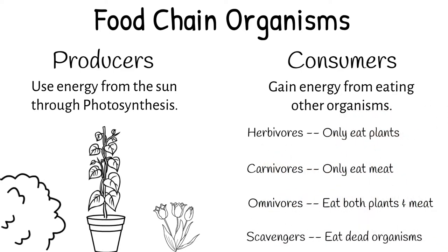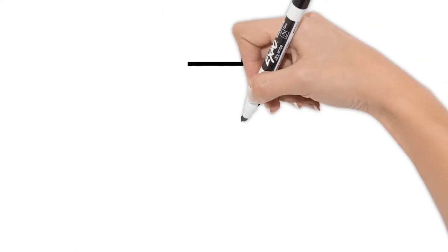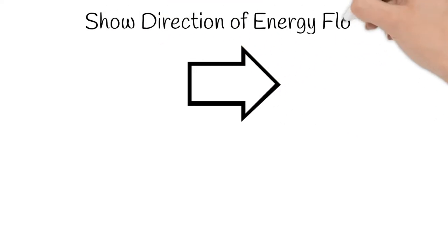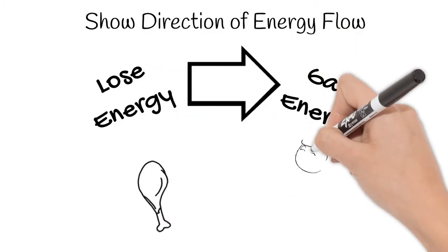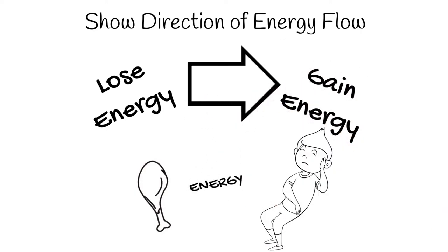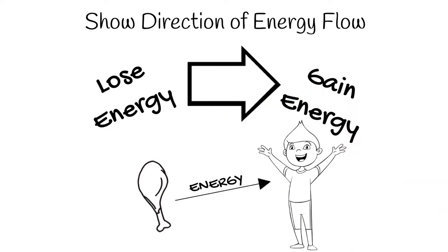The last piece of a food chain is an arrow and is actually very important. Arrows are used in food chains to show the direction energy flows. For example, when you eat chicken you get the energy from it, so the arrow would point from the chicken to you.